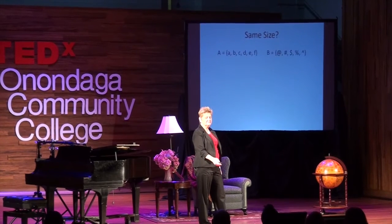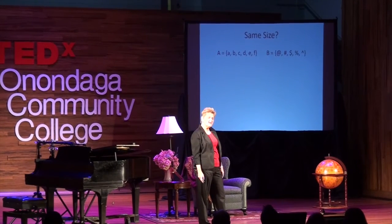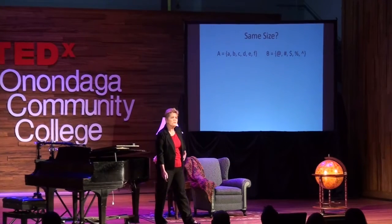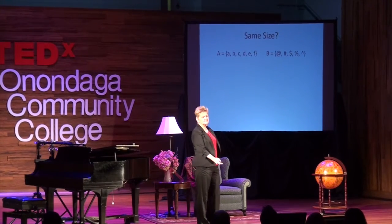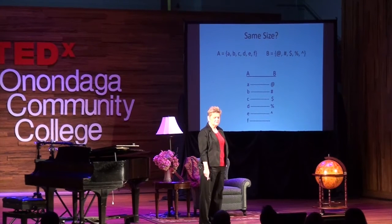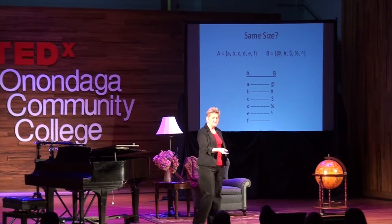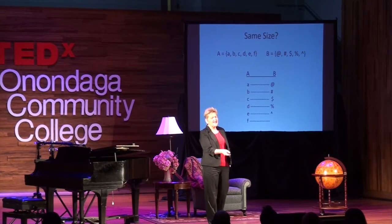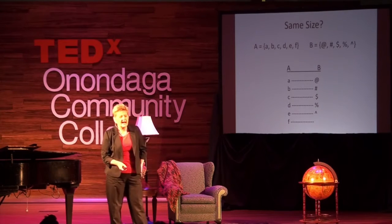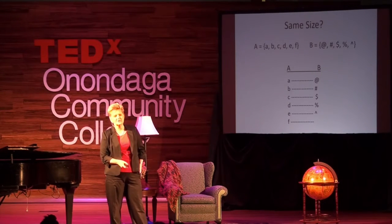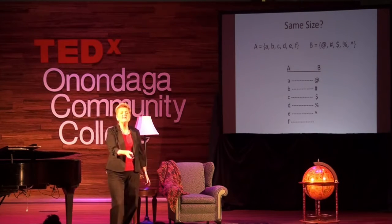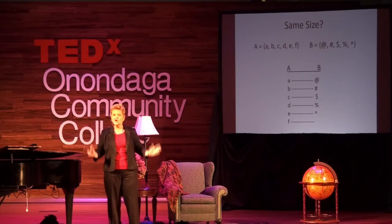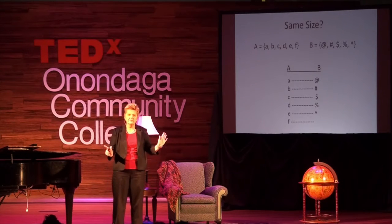Let's try it again — are these two sets the same size? I don't want to count the elements, so let's see if we can make a one-to-one correspondence between these sets. The element F in set A does not have a dancing partner. Set A has more elements in it than set B. Set A's cardinality is larger than set B — we can say that set A is larger than set B beyond a shadow of a doubt.